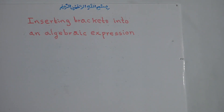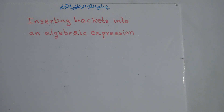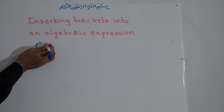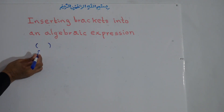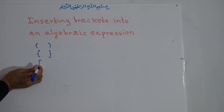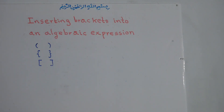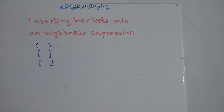Welcome to math class. Our title is inserting brackets into an algebraic expression. In the previous lesson we discussed how to simplify brackets. Now our topic is how to insert brackets. For inserting brackets, the same three kinds of brackets apply: small, medium, and big. You always put first the small bracket, then the medium one, then the big one.